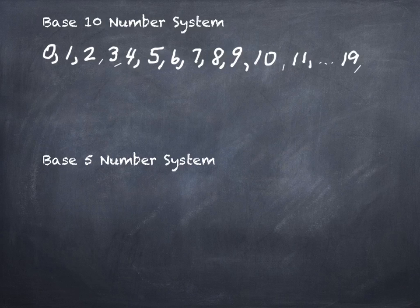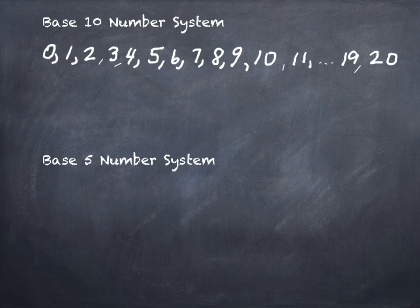Why do we use base 10? Fingers — there are 10 fingers. If we'd been born with eight fingers, we probably would not be using base 10. Base 5 is a number system that has been used historically because people counted with one hand. Base 5 does not have 10 numerals.